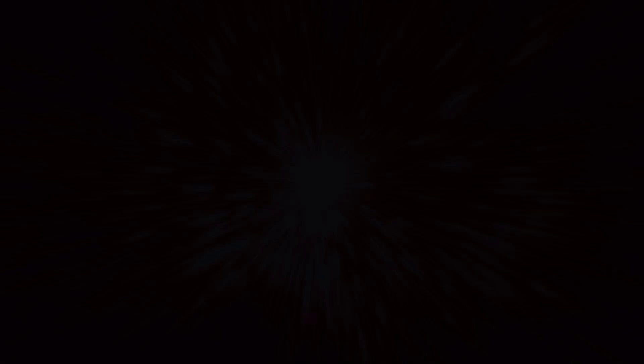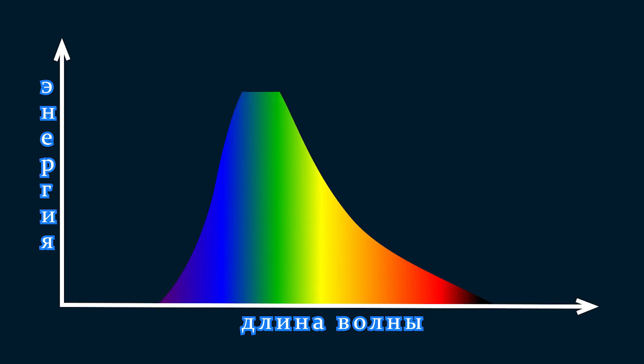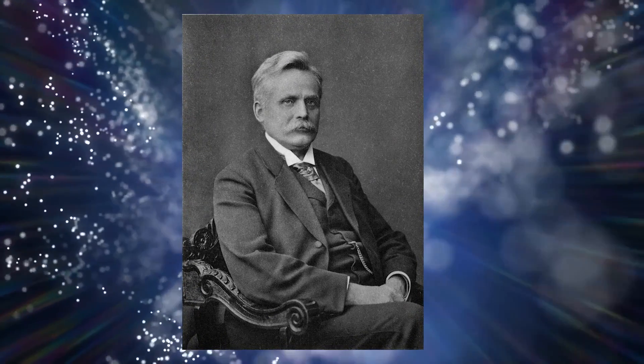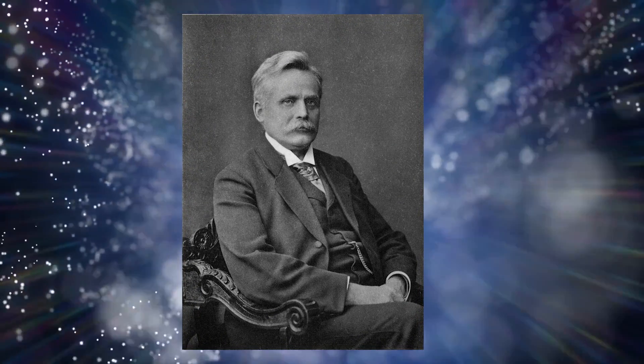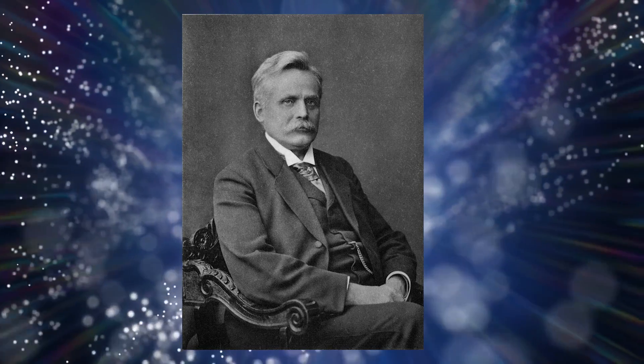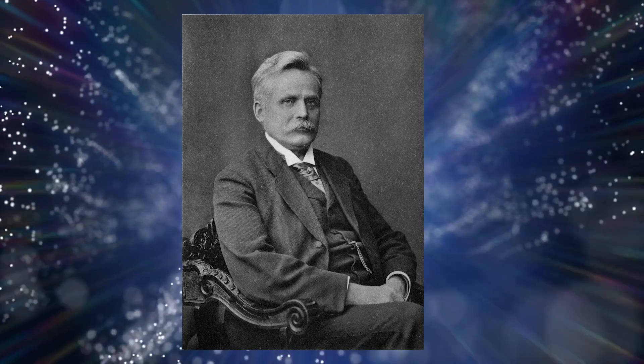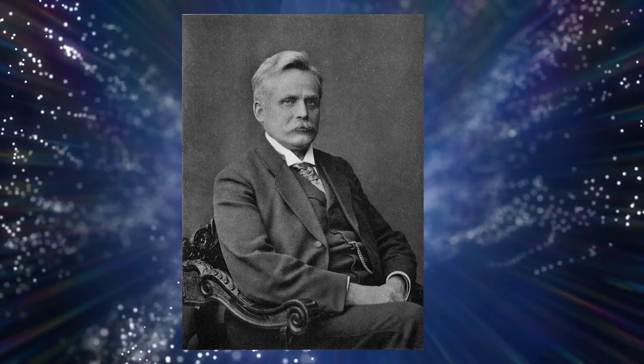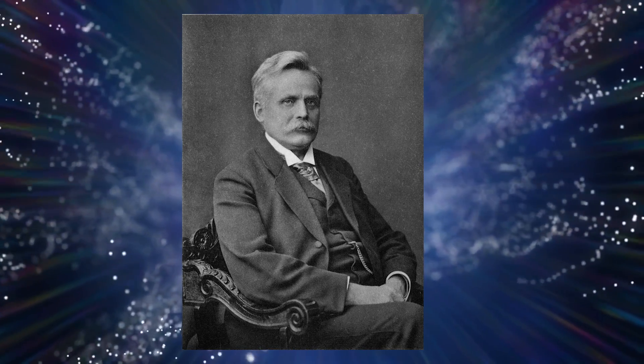Furthermore, experiments showed that real emission spectra did not closely resemble the predicted formula of the Rayleigh-Jeans law. They exhibit a maximum at a certain temperature, beyond which the intensity of emission rapidly decreases. In 1893, Wilhelm Wien empirically derived his law of the emission of heated bodies based on experimental data. However, while this law described the process of emission well, it did not explain why it occurred.